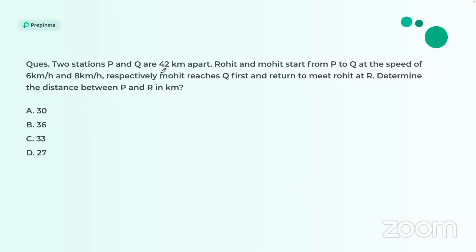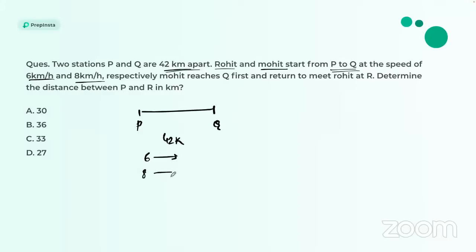Two stations P and Q are 42 kilometers apart. Rohit and Mohit start from P towards Q at speeds of 6 km/h and 8 km/h respectively. Mohit reaches Q first and returns to meet Rohit at R. We need to determine the distance between P and R. It's an advanced level question, so carefully look at how to solve this type of problem.